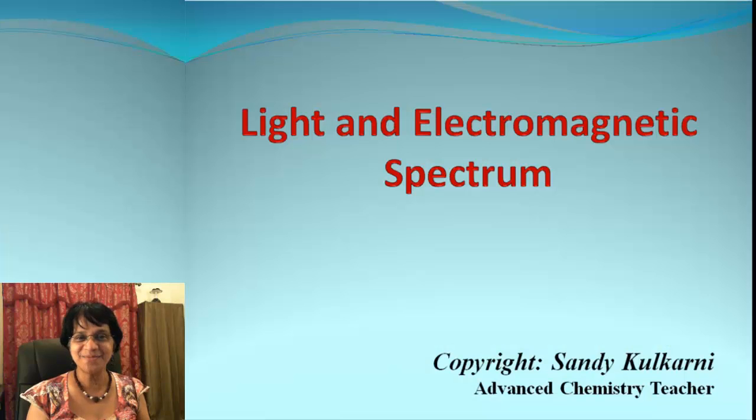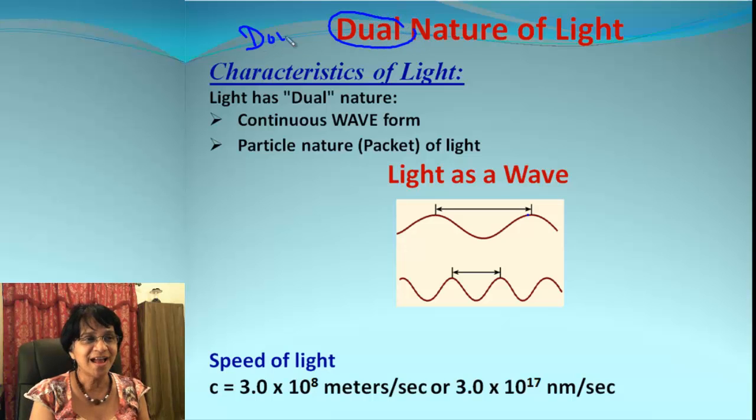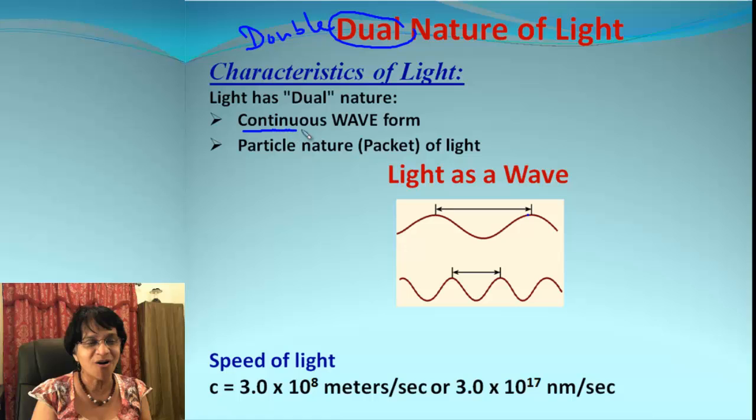Hey kids, Miss Kulkarni here. Let's talk about light energy and electromagnetic spectrum in this video. Remember, light has dual nature—dual means double nature—and which are these two different forms? One of them is called continuous waveform and the second is called the particle nature or packets of light.